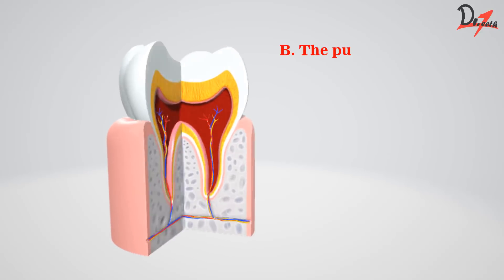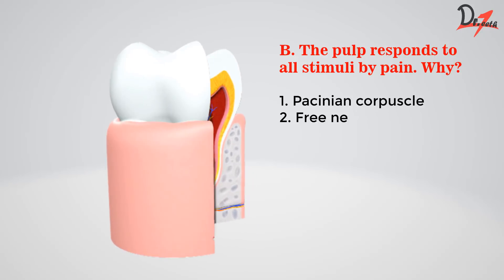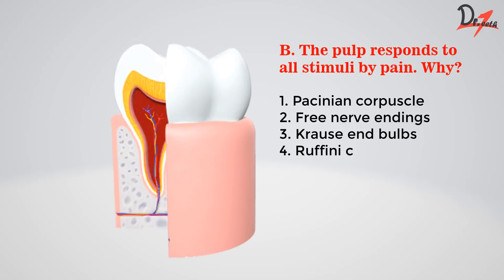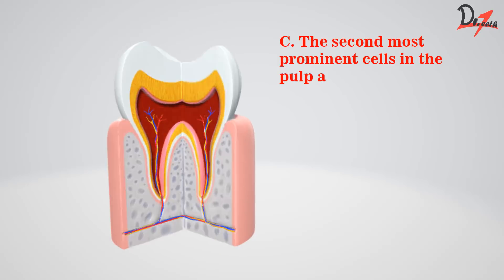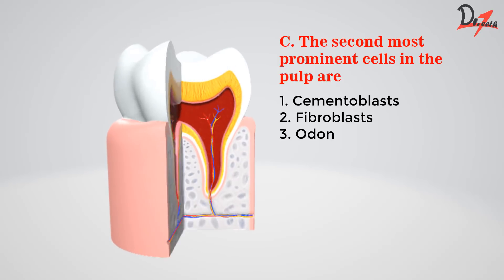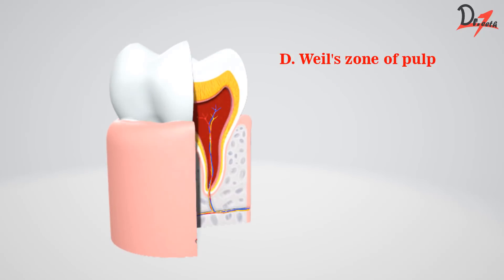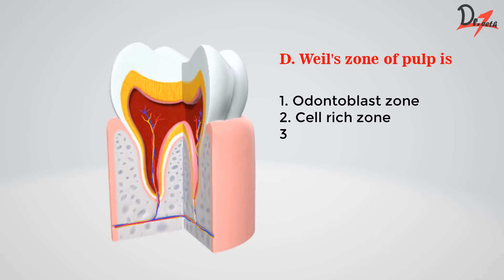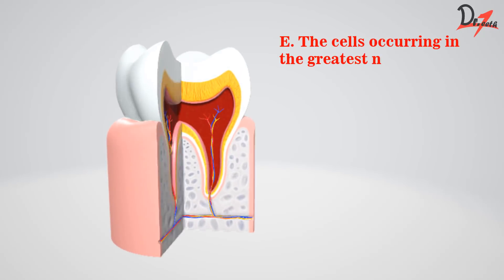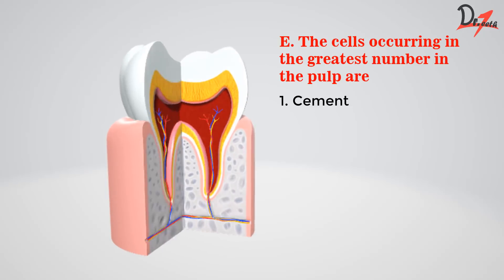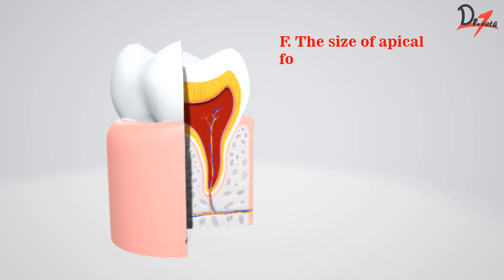Second question: the pulp responds to all stimuli by pain — why is that so? Third question: the second most prominent cell in the pulp are — hint they are spindle shaped. Fourth question: the cells occurring in the greatest number in the pulp are — hint they are spindle shaped. Fifth question: the size of the apical foramen of maxillary teeth in an adult is.